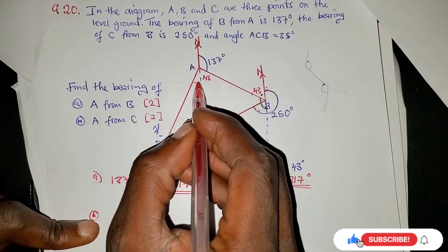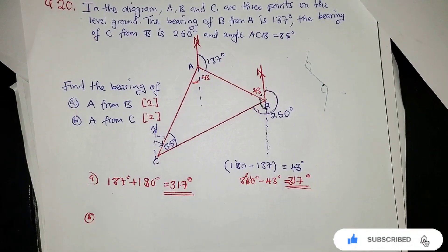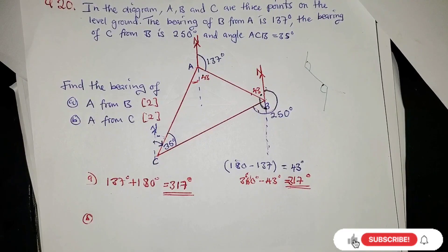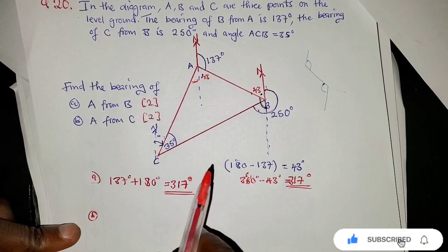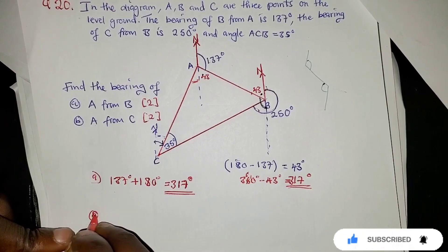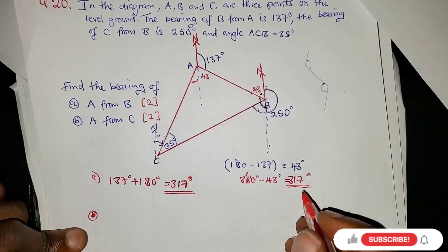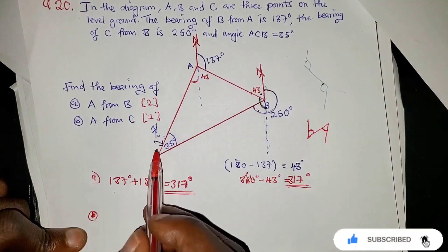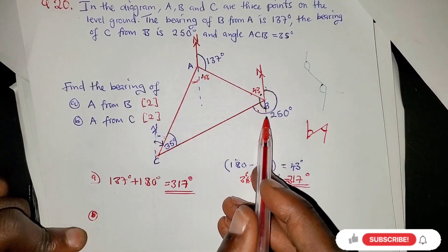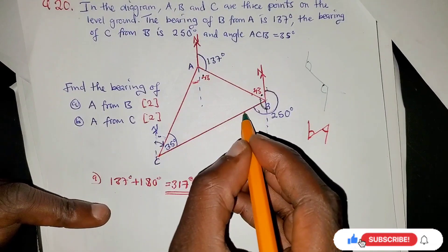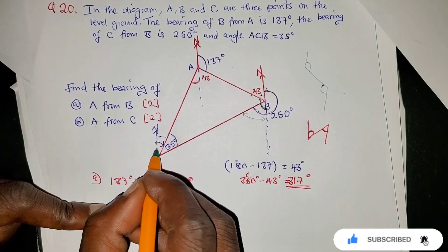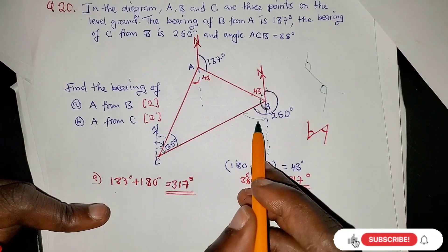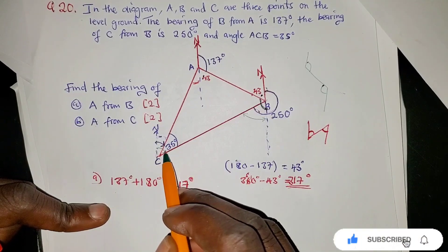We can use alternate angles here as well. If you know the angle up at B, you can find the corresponding angle at C. The angle from north at C up to the line connecting C and B is equal to the alternate angle at B. If we can find that angle, it will be easy to find the bearing.